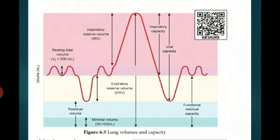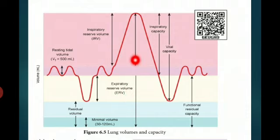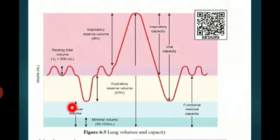To recap respiratory volumes: a normal human adult breathes 6000 to 8000 milliliter of air per minute. Inspiratory reserve volume is additional air inhaled; expiratory reserve volume is additional air exhaled from the body; and residual volume — 1100 to 1200 milliliter — is the air remaining in the lungs simultaneously during inspiration and expiration.